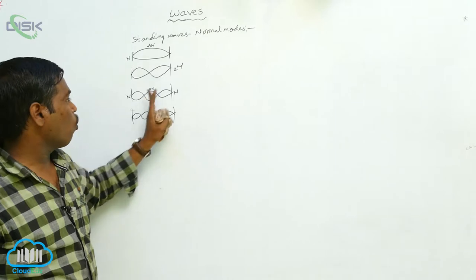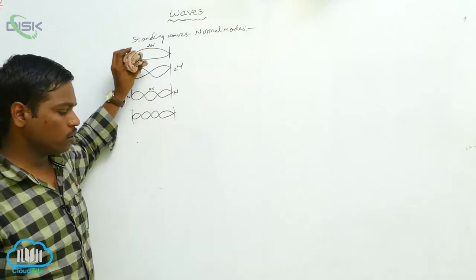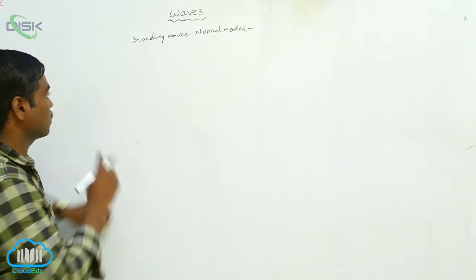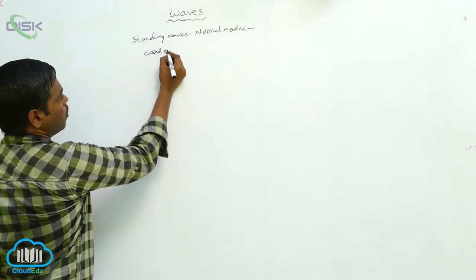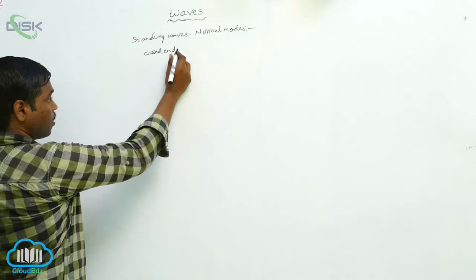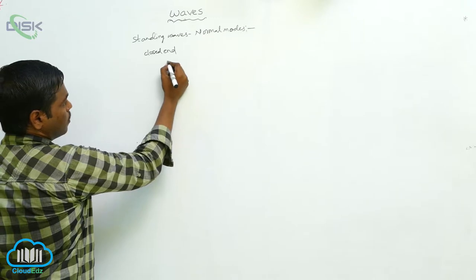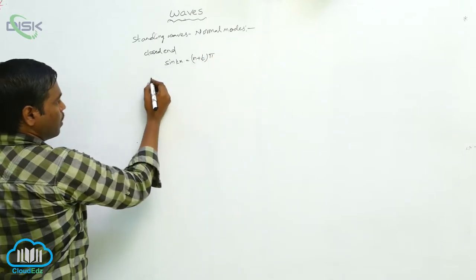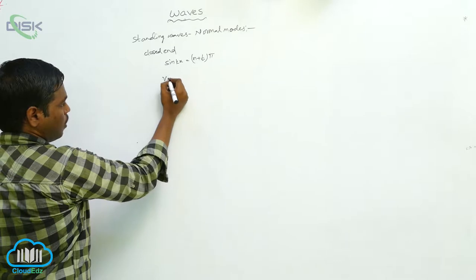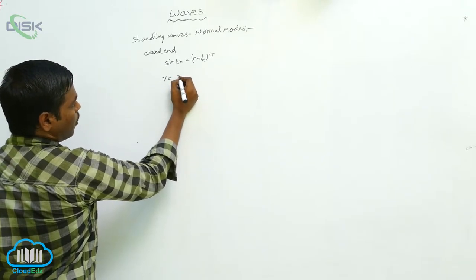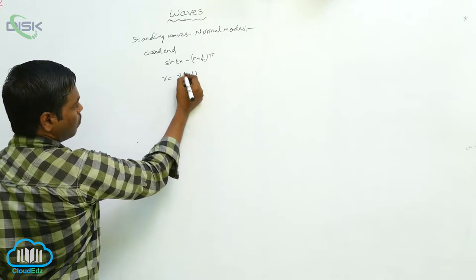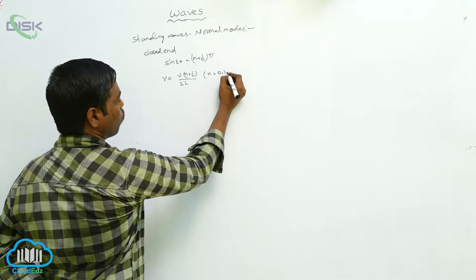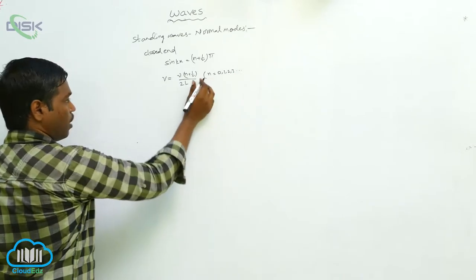For both open ends, these are the harmonics. Now for the closed end, the harmonics produced are like this. For the closed end, the standing waves produced depend on the formula: sin(kx) equals (n + 1/2) times pi, from which we get v equals nu times (n + 1/2) divided by 2L, where n equals 0, 1, 2, 3, and so on.